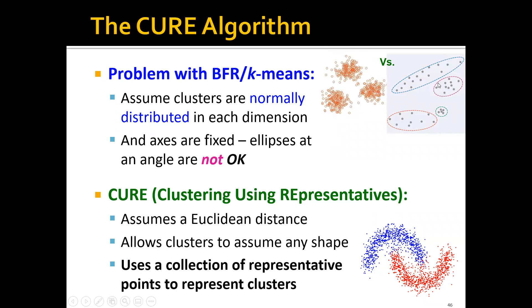So the CURE algorithm, which stands for Clustering Using Representatives, assumes a Euclidean distance and allows clusters to assume any shape. It uses a collection of representative points to represent the clusters. You can see that now we can use these representatives to handle any shape.